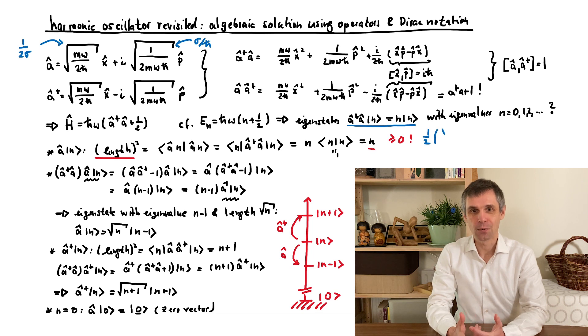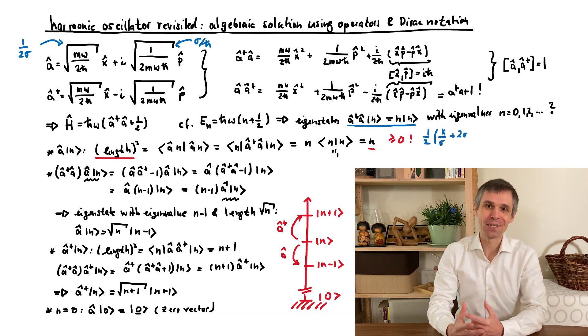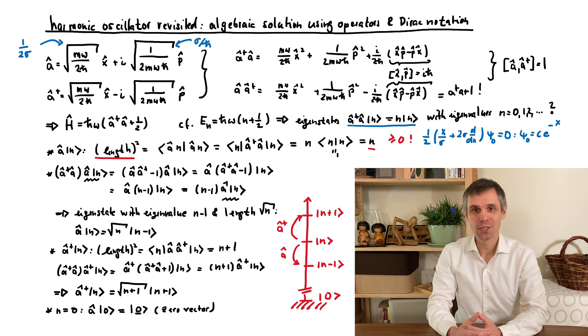And the differential equation that we have here is actually much simpler than the Schrödinger equation, because it is of first order and can be integrated immediately. And the solution is simply the Gaussian function that we encountered before.